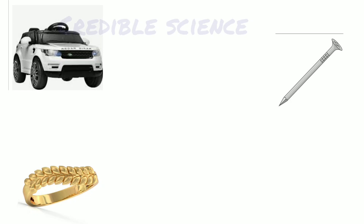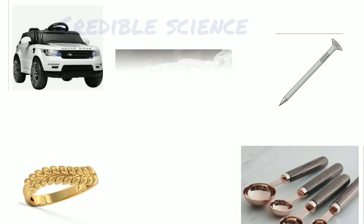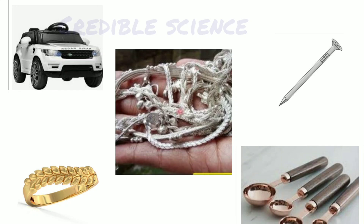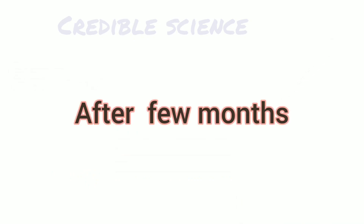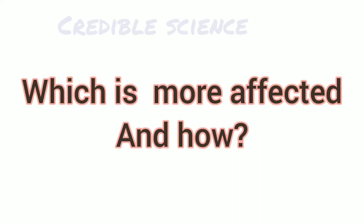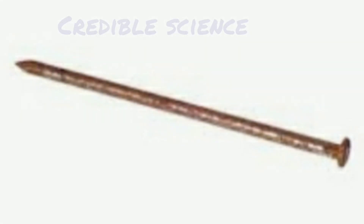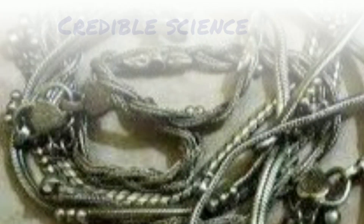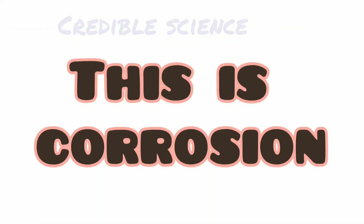What do you see here? It's a golden ring, a toy made of aluminium metal, an iron nail, spoons made of copper, and anklets made of silver. After a few months, which is more affected and why? The iron nail is the one which gets most affected, and next is the silver jewellery — the anklet. What is actually happening? This is corrosion.